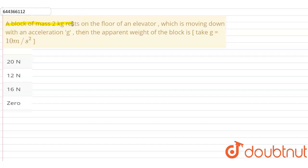A block of mass 2 kg rests on the floor of an elevator which is moving down with an acceleration g. Then the apparent weight of the block is? Take g equals 10 meters per second squared.